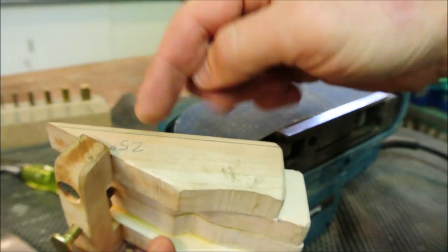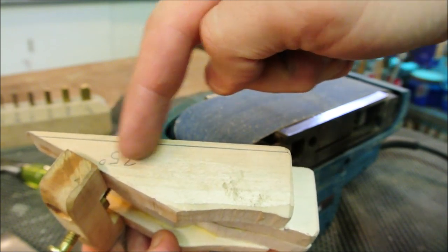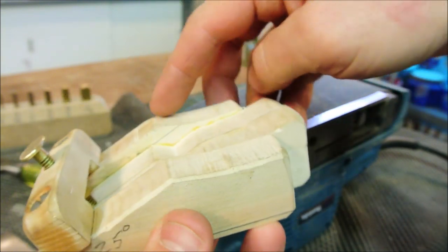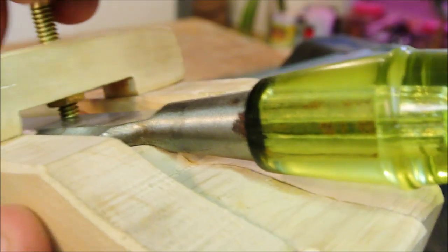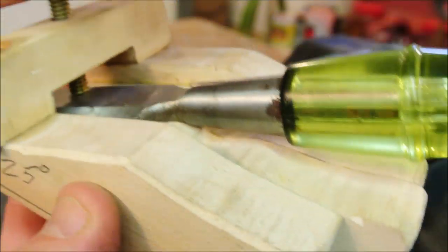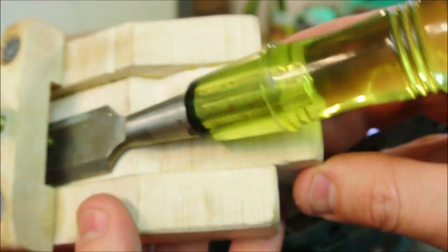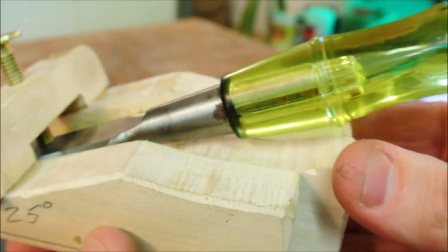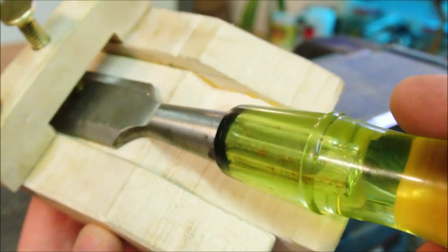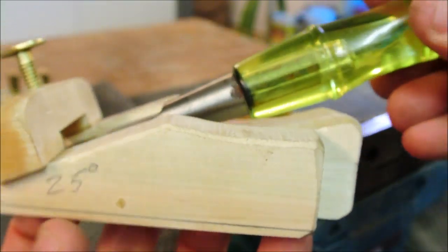You just cut 25 degree triangles, and then, of course, you'll have to custom cut these triangles to accommodate the chisel handles that you have. Since there's a million different manufacturers of chisels, there are a million different ways to cut them off.